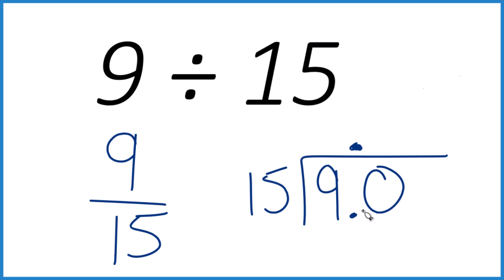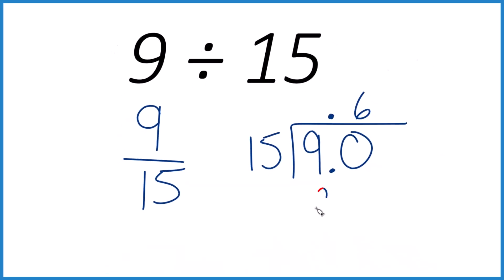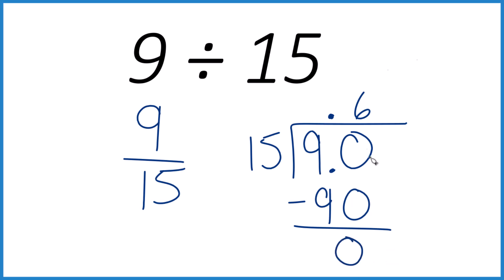So 2 times 15 is 30, 4 would be 60, and 6 times 15 is 90. So now we can just subtract and we end up with no remainder.